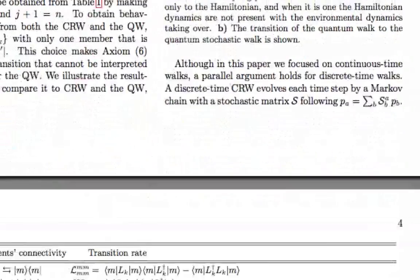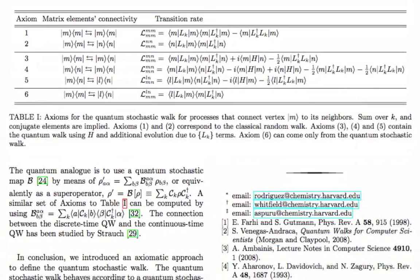We computed a series of axioms that are given in this table. In this table, what it says is if you have some topology of some graph with certain connectivity, and you want to know what are the quantum stochastic walk processes you can associate to it, this gives you the rules of how to do it.